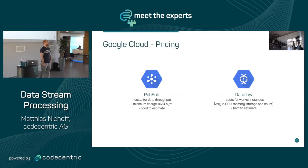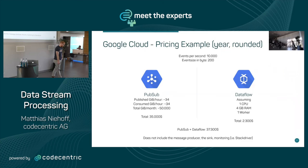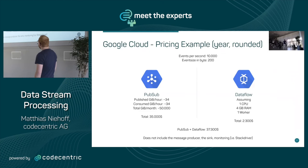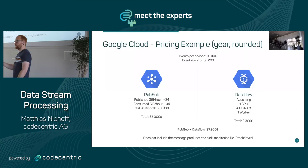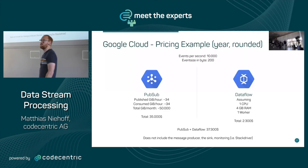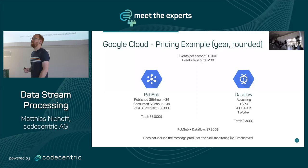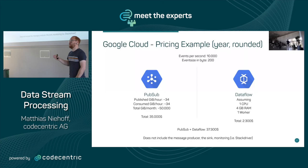With the same example input — 10,000 events per second at 200 bytes — Pub/Sub is pretty expensive: about 34 gigabytes published. Dataflow is comparably priced. But be aware: this small event size is misleading because Google Pub/Sub has a minimum event size of 5 kilobytes. So if your events are under 5KB, you're billed as if they're 5KB.